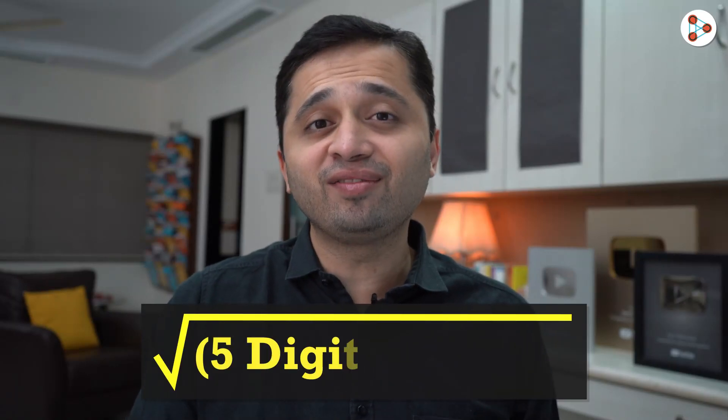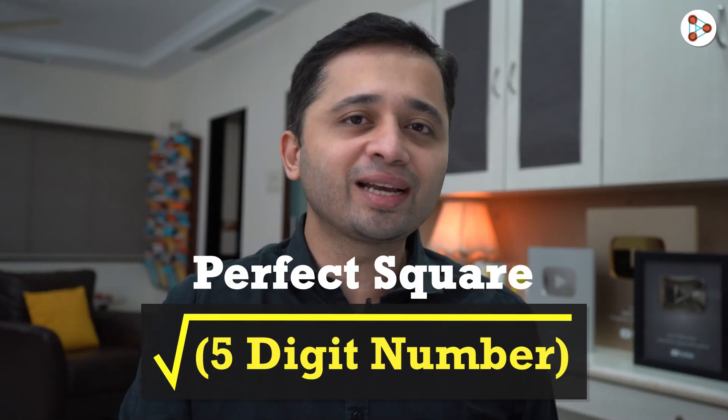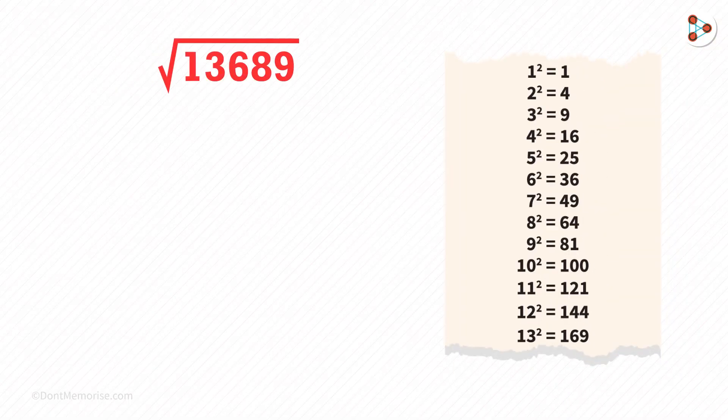How can you calculate the square root of any 5 digit perfect square without using a calculator? Let's try to find the square root of 13689.